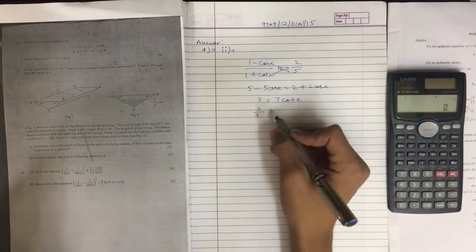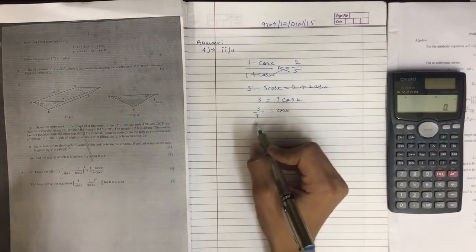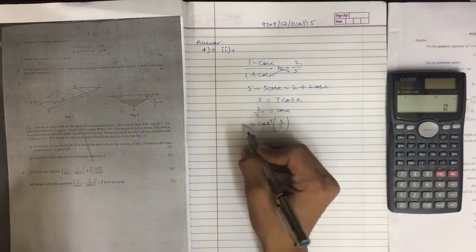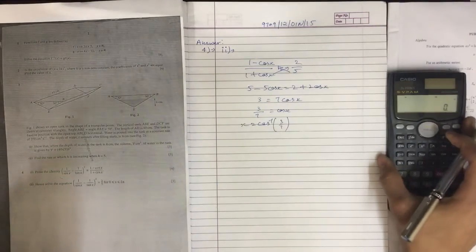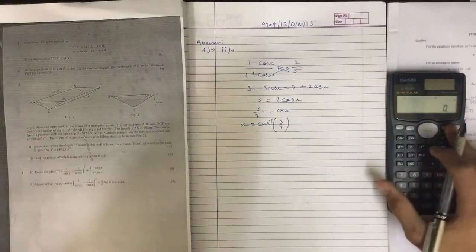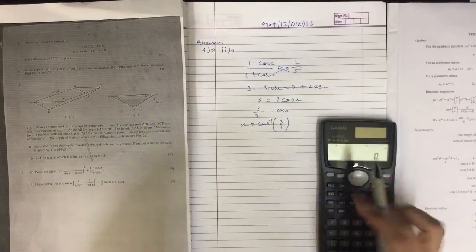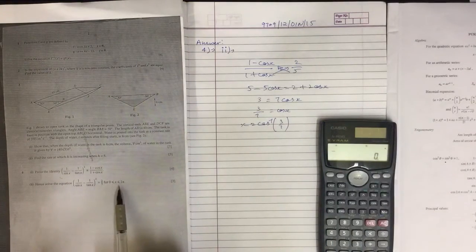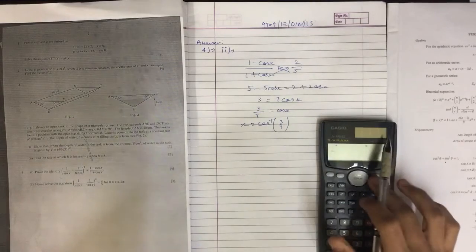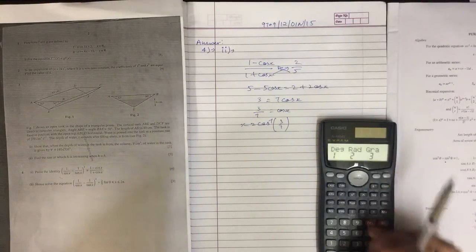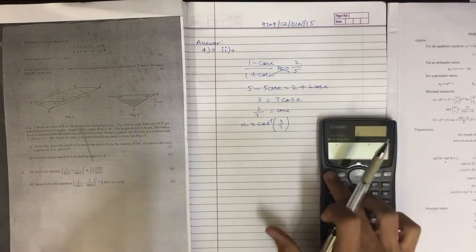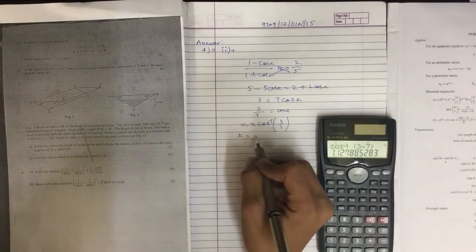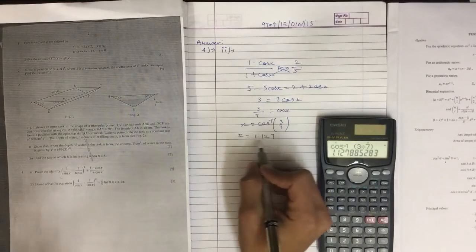So 3 over 7 equals cos x, and cos inverse of 3 over 7 gives us the value. We can use our calculator for this. Make sure you do not keep your calculator in degrees because we are working with 2 pi. Keep it in radians. Now solve this in the calculator and you get x equals 1.127. This is lying between 0 and 2 pi.